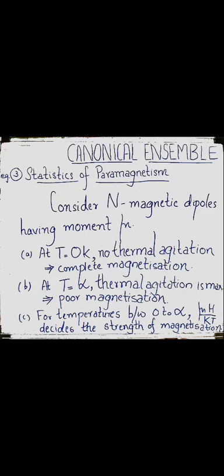We consider N magnetic dipoles in a paramagnetic material having dipole moment mu in the presence of a magnetic field H. They will experience a torque which will align them in the direction of the field, resulting in complete magnetization. But in reality, thermal agitation offers resistance to this alignment, resulting in partial magnetization. At T equal to 0 Kelvin, there is no thermal agitation, resulting in complete magnetization of the material.